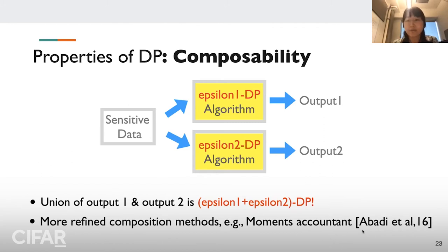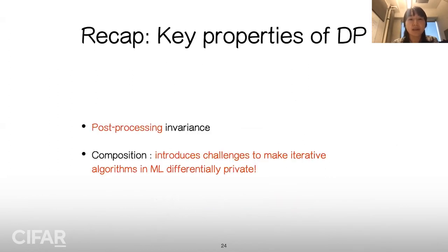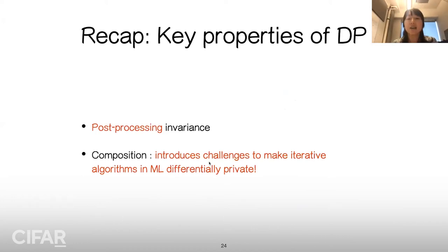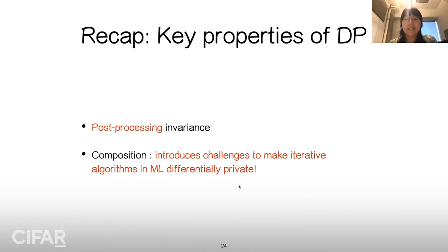This epsilon_1 + epsilon_2 upper bound is pessimistic; there are tighter bounds for composed DP mechanisms. The composition property makes applying DP to ML algorithms very challenging, because many ML algorithms are iterative — they access data over and over again. The most obvious example is stochastic gradient descent in deep learning training. So there is a high challenge in how to privatize deep learning training.